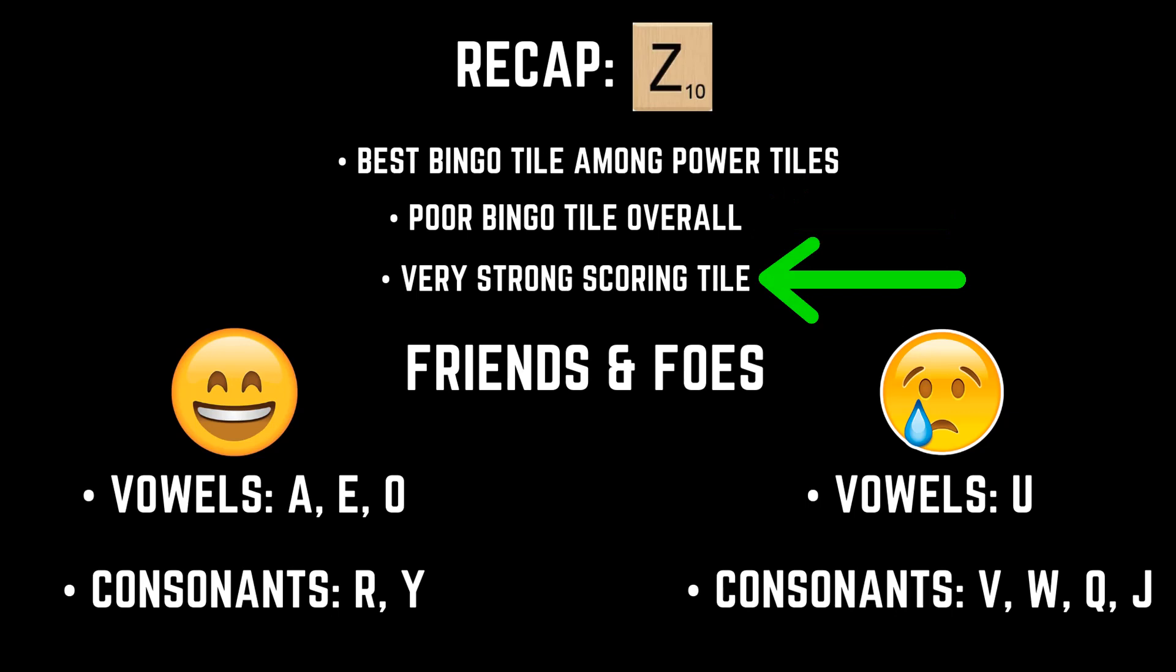But the Z makes up for that shortcoming and then some as a scoring tile. It turns vowel heavy racks into great scoring opportunities and pairs well with most other consonants to consistently score in the 30 to 70 point range.